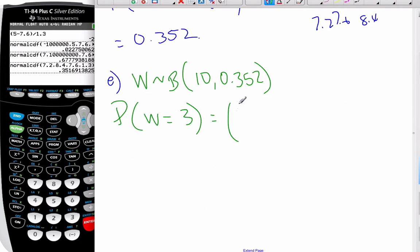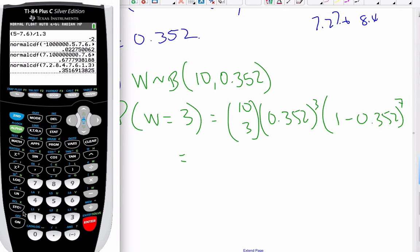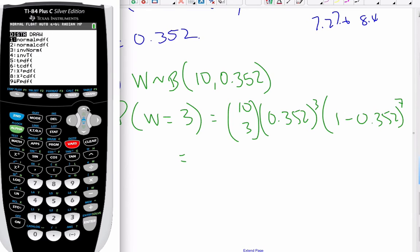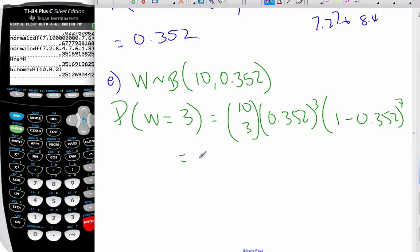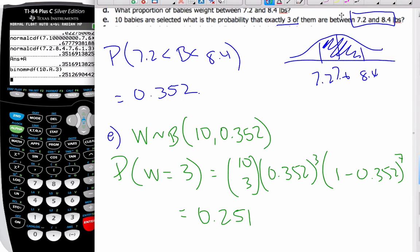I want to find the probability that W equals 3. I could do 10 choose 3 times 0.352 to the third times 1 minus 0.352 to the seventh. I can also just go to my calculator. I'm going to store this value in A so I have all the decimals. I go to distributions, binomial PDF, number of trials is 10, my probability is A, my X value is 3, and my probability is 0.251. This problem started off with normal and then switched to a binomial situation.